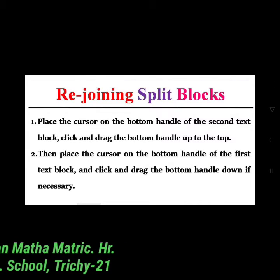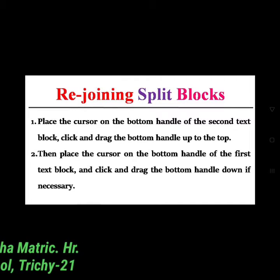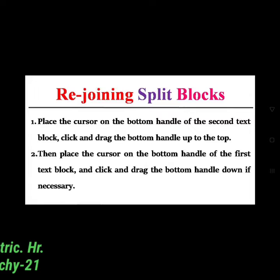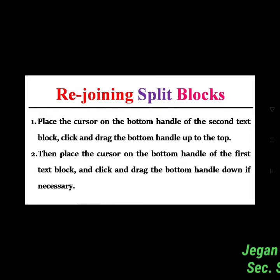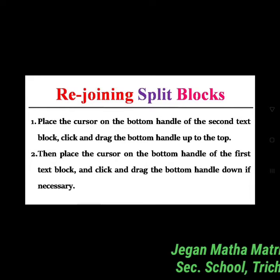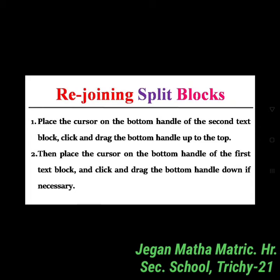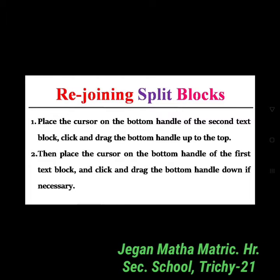Next is rejoining a split block. To rejoin two text blocks, follow two steps. First, place the cursor on the bottom handle of the second text block and click and drag the bottom handle up to the top. Then place the cursor on the bottom handle of the first text block and click and drag the bottom handle down if necessary.